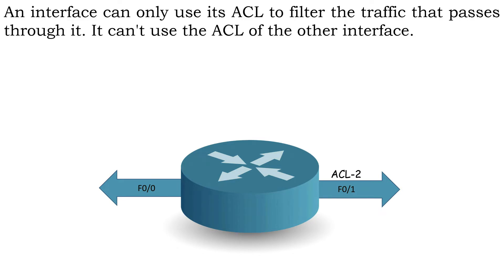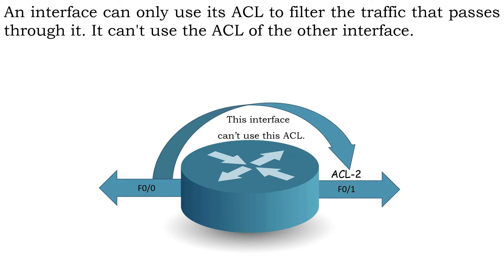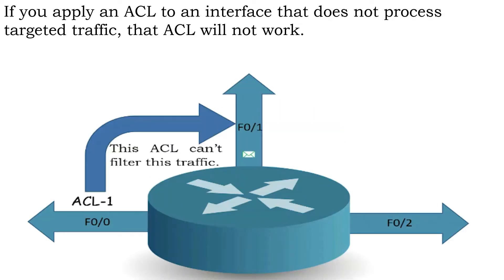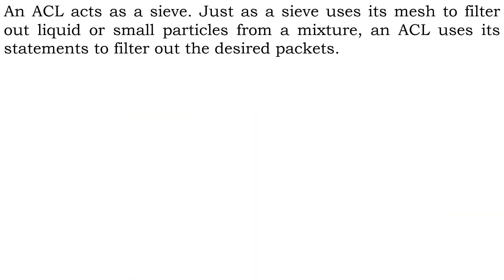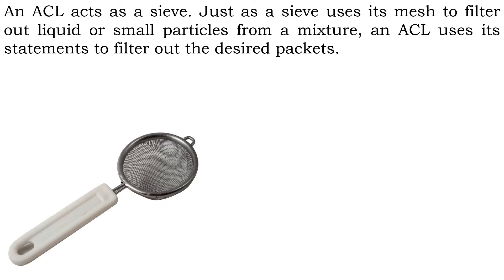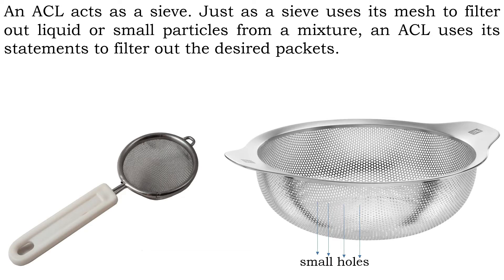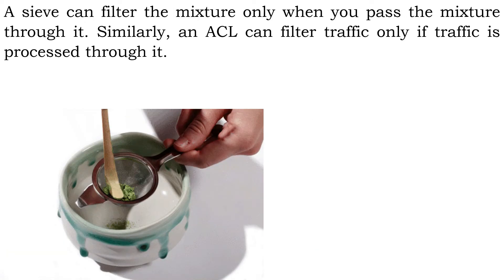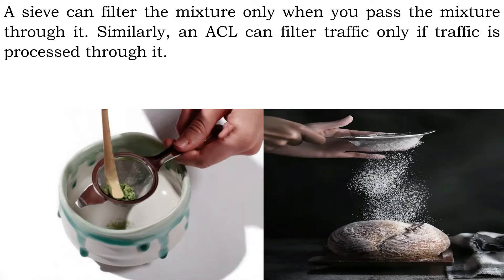An interface can only use its ACLs to filter the traffic that passes through it — it cannot use the ACLs of the other interface. If you apply an ACL to an interface that does not process targeted traffic, that ACL will not work. An ACL acts as a sieve: just as a sieve uses its mesh to filter out liquid or small particles from a mixture, an ACL uses its statements to filter out the desired packets. A sieve can filter the mixture only when you pass the mixture through it; similarly, an ACL can filter traffic only if traffic is processed through it.